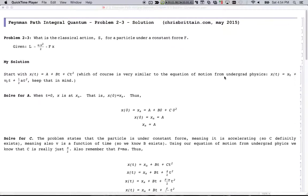Feynman path integral problem 2-3 solution. More solutions on chrisbritton.com. This problem 2-3 asks, what is the classical action S for a particle under a constant force F? The given is Lagrangian.